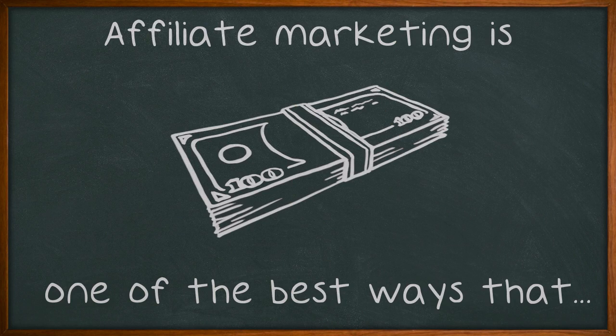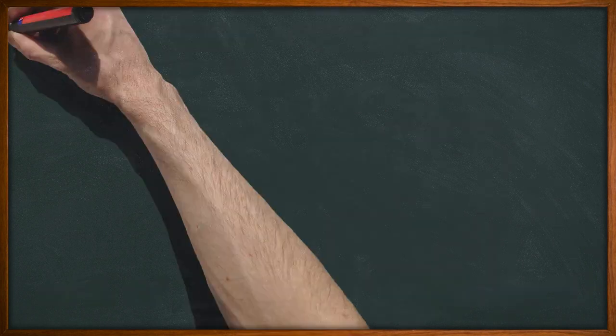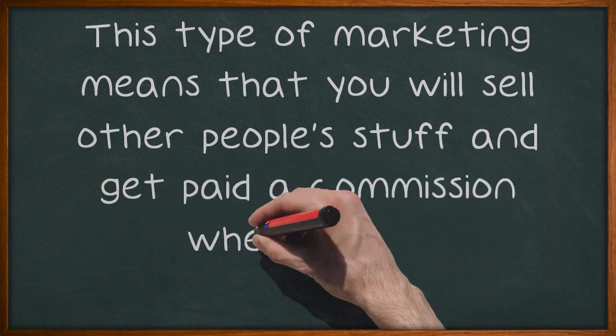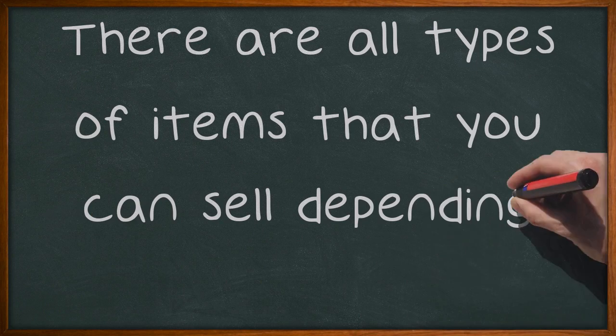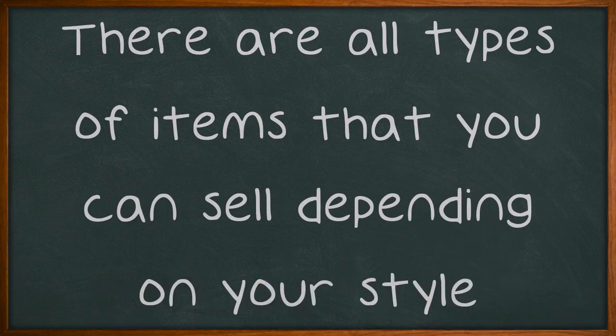Affiliate marketing is one of the best ways that you can make money online in your spare time. This type of marketing means that you will sell other people's stuff and get paid a commission when you do. There are all types of items that you can sell depending on your style.